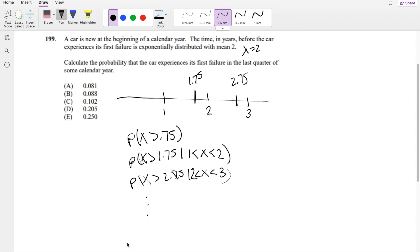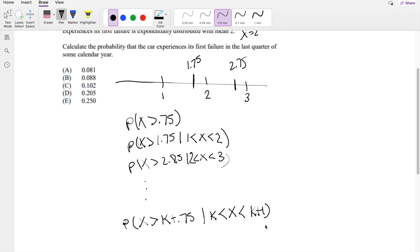We can generalize this by saying what's the probability that x is greater than k plus 0.75. If k, let's say, is 1, then you know this is k. k is less than x is less than, if k is 1, let's say, this value right here is just k plus 1. So this is what we're looking for here.